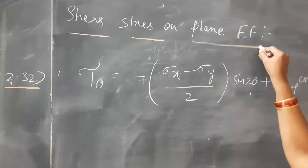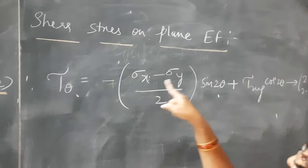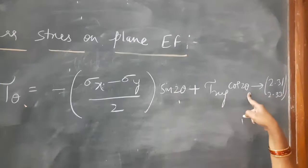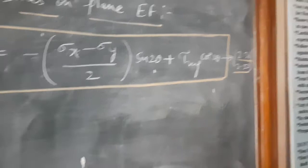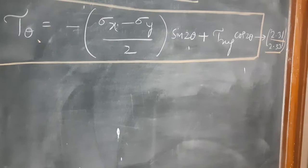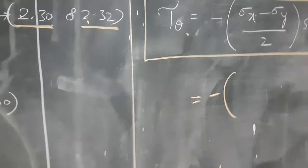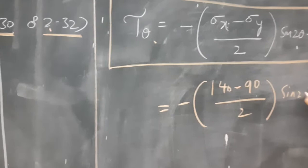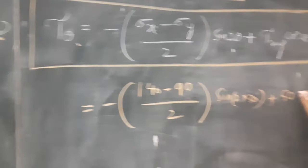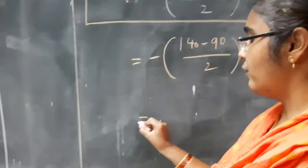Now on the same plane let us find the shear stress. Shear stress on plane EF is found using: tau_theta = −(sigma_x − sigma_y)/2 × sin(2θ) + tau_xy × cos(2θ). This formula is also in your data handbook — equation 2.31 in the old handbook, or 2.33 in the new handbook. Substituting: sigma x is 140 MPa, sigma y is 90 MPa, divided by 2, with sin(2×30°), plus tau xy of 50 MPa into cos(2×30°).